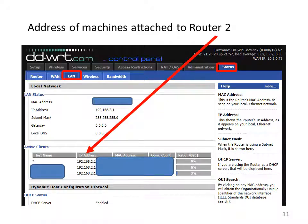Another way to find the IP addresses of machines attached to your router is by going to the status tab and clicking on LAN — the same applies for wireless if you're connecting via Wi-Fi. This is not as easy to understand which machines are which, but it's also a useful place to find the IP addresses of your machines.